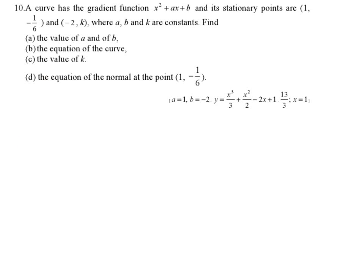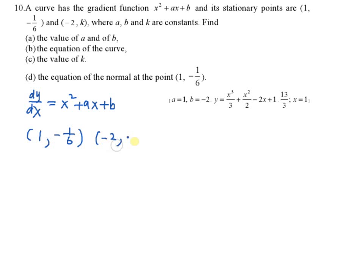Look at example 10. A curve has a gradient function x squared plus ax plus b, so dy/dx is x squared plus ax plus b, and its stationary points are (1, -1/6) and (-2, k). Remember, for a stationary point, dy/dx equals 0. So you try to substitute these two points into the dy/dx.